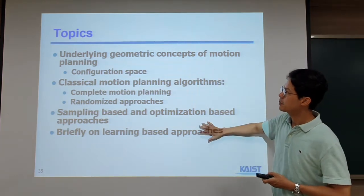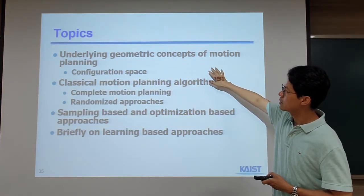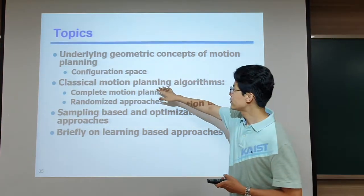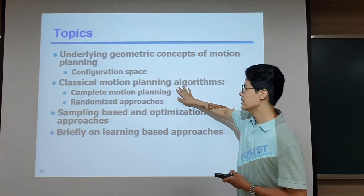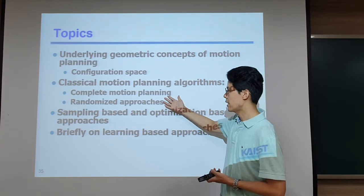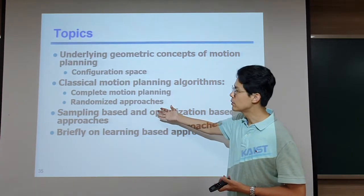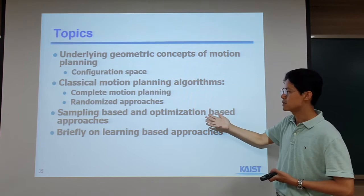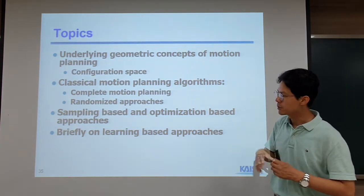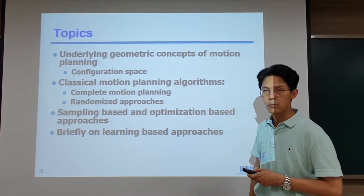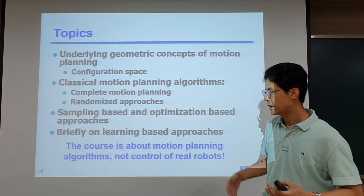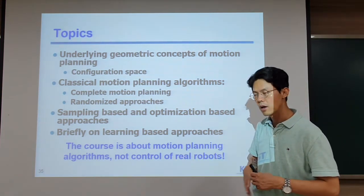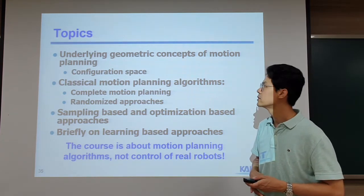These are the main topics. We will talk about underlying geometric concepts of motion planning, then move on to classical motion planning techniques like complete motion planning and randomized techniques, then to sampling-based or optimization-based approaches. I will also briefly touch on recent learning-based methods. This course is about motion planning algorithms, not low-level control of real robots.